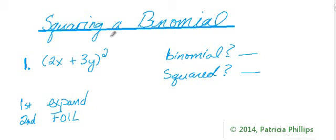So if you're asked to solve the problem 2x plus 3y squared, that means that 2x plus 3y will be used as a factor 2 times. And it will be easier to solve this if we use two methods. First of all FOIL and second of all there's a formula that we're going to do after the FOIL.